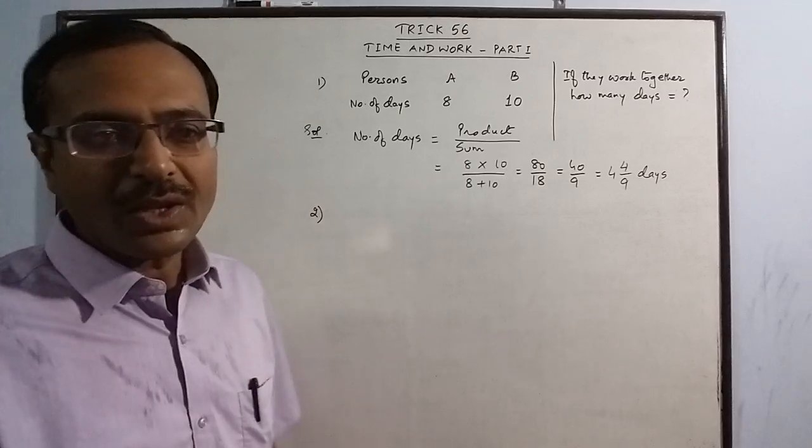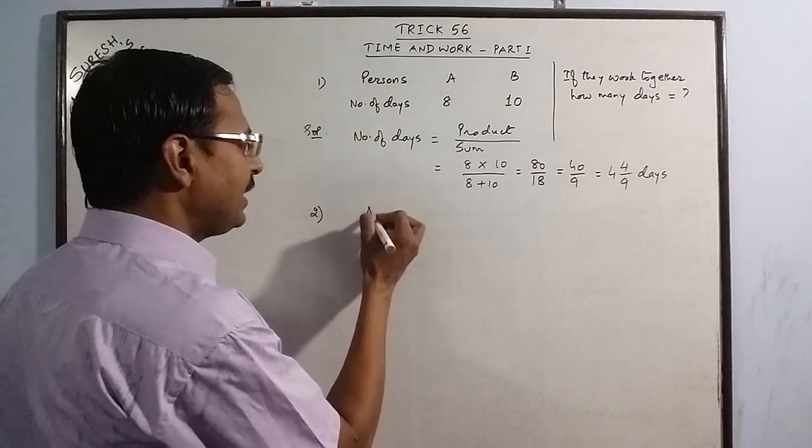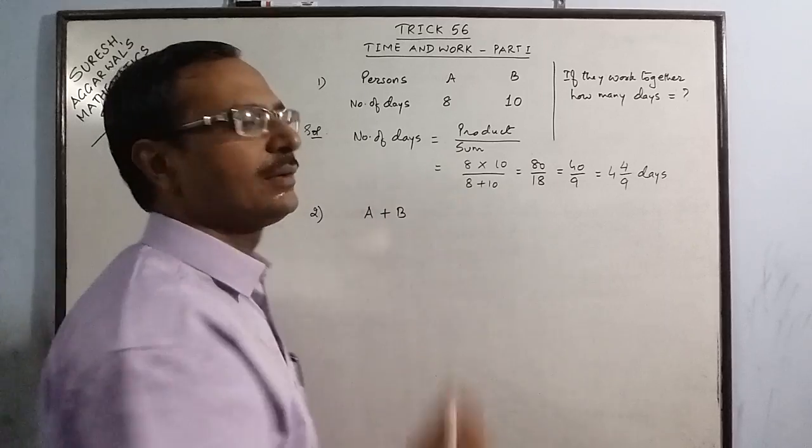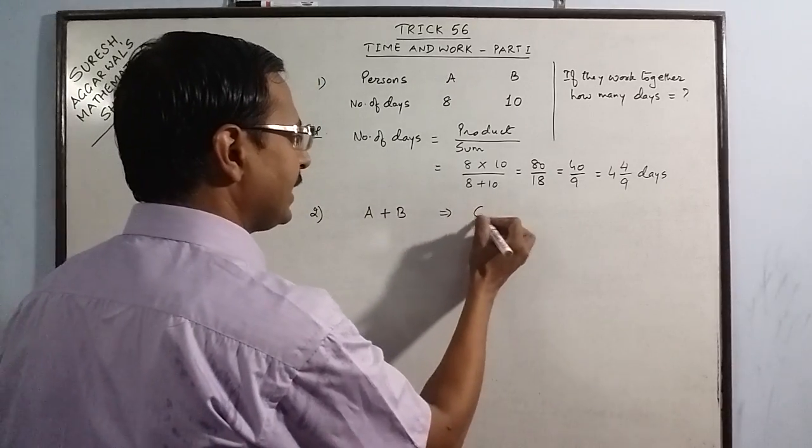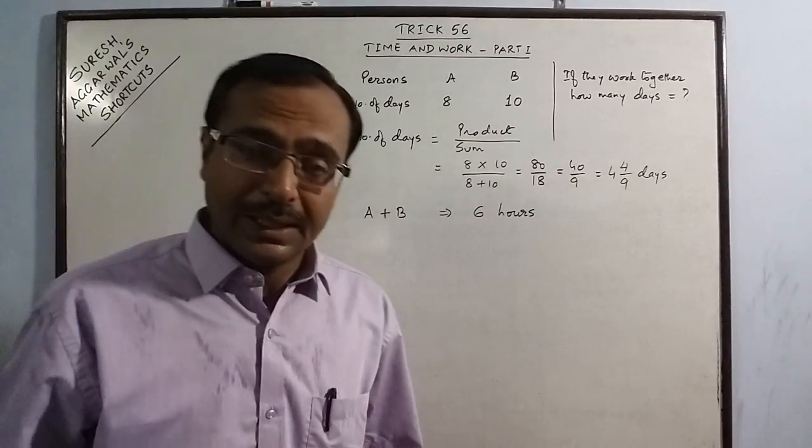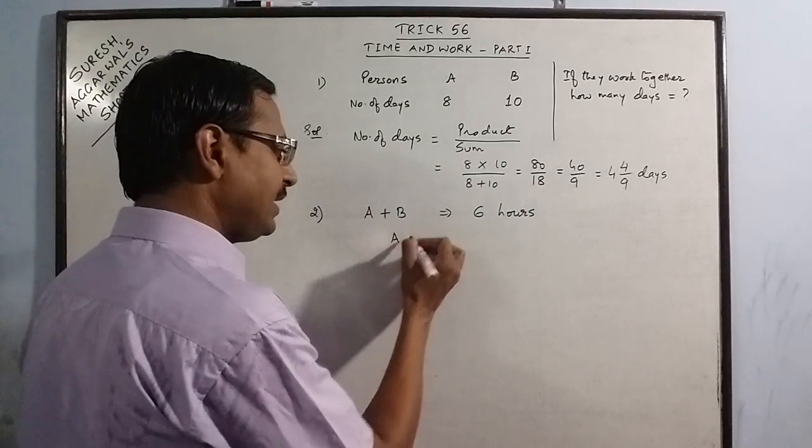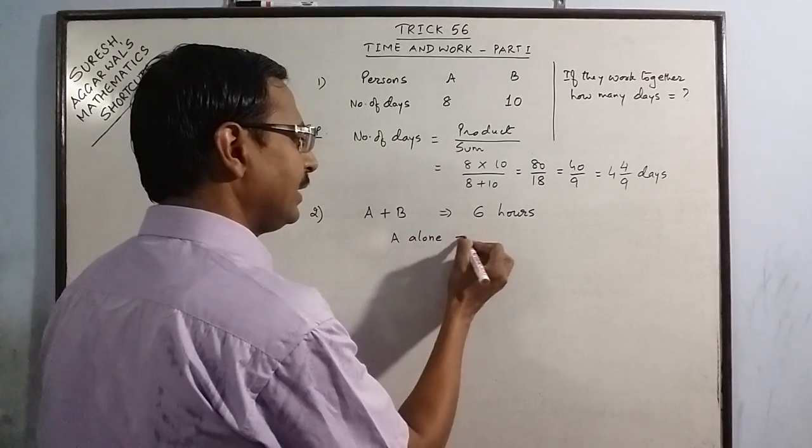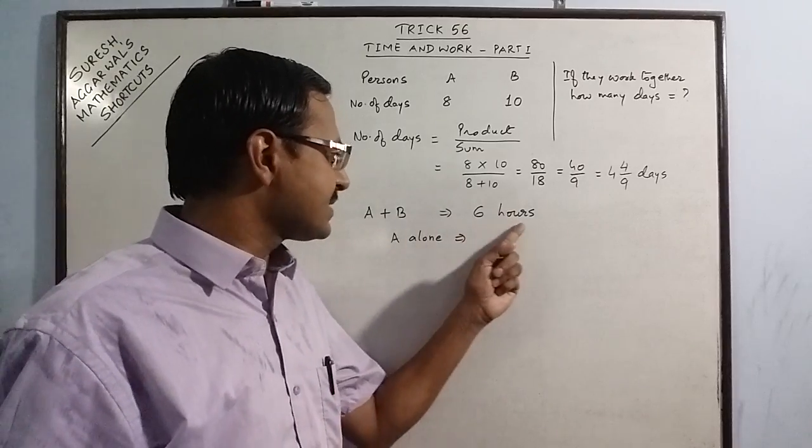Now the second type of question. We will take A and B, they are working together. If they work together, they are taking 6 hours to do a work. Now one of them, say we will take A. If he works alone, obviously he will take longer time because if they are working together, they are taking 6 hours. So if A works alone, he will take longer time. I will take this time as 10 hours.